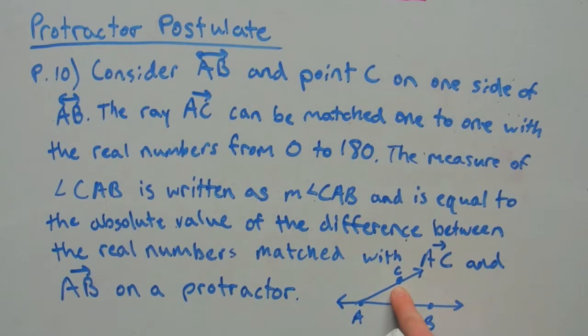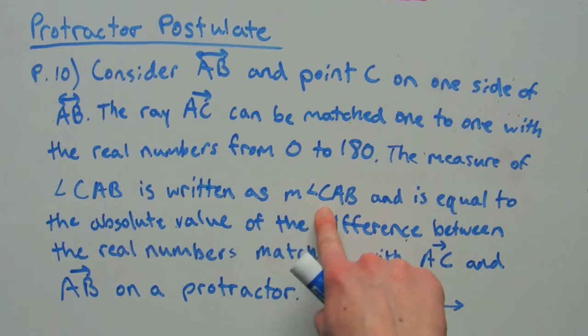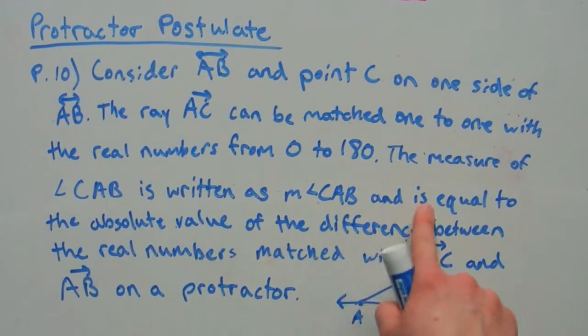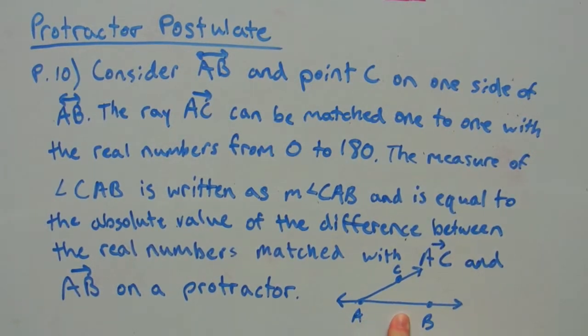And the measure of this angle CAB is written as M angle CAB. So, that stands for the measure of angle CAB. And the measure is equal to the absolute value of the difference between the real numbers matched with ray AC and ray AB on the protractor.